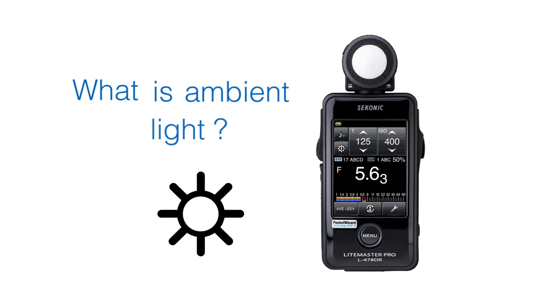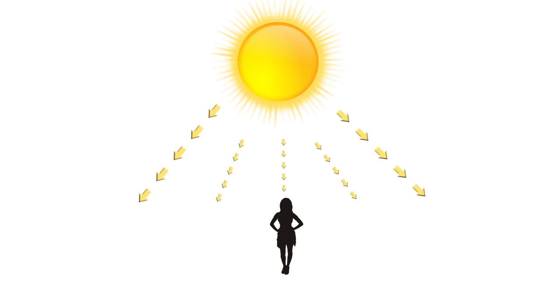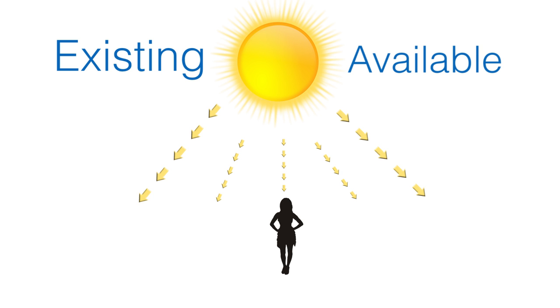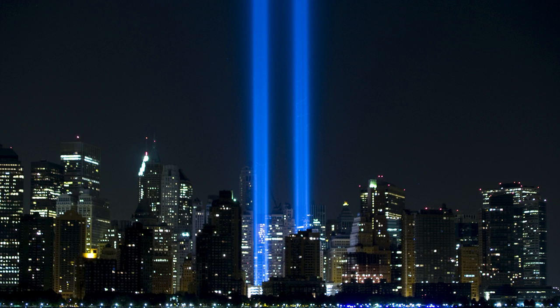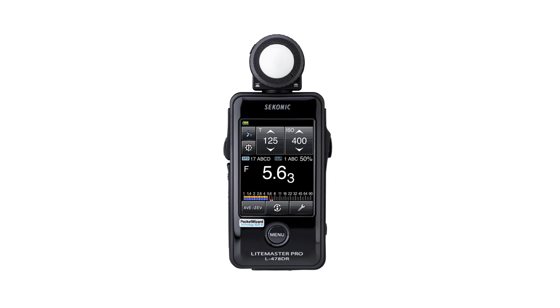You may be wondering: what is ambient light anyway? Ambient light is the light that surrounds a subject or environment. It's the existing or available light that's in a scene. It's referred to many times as natural light, or light that evenly illuminates a scene from no apparent direction. It can be indoor lighting, a bright sunny day, a foggy day, or even city lights at night. So basically, it's any kind of light that is pre-existing.